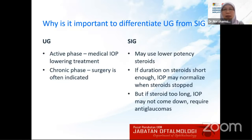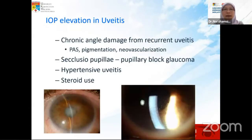In steroid-induced glaucoma, you may switch to a lower potency steroid. If the duration of steroid use is not long enough, IOP may normalize once you stop the steroids. But if the patient has been on steroids too long, IOP may not come down and they require anti-glaucoma medications. IOP elevation in uveitis can occur because of angle changes from peripheral anterior synechiae, pigmentation, or neovascularization, or because of seclusio pupillae, commonly seen in pupillary block glaucoma, or from hypertensive uveitis and steroid use.